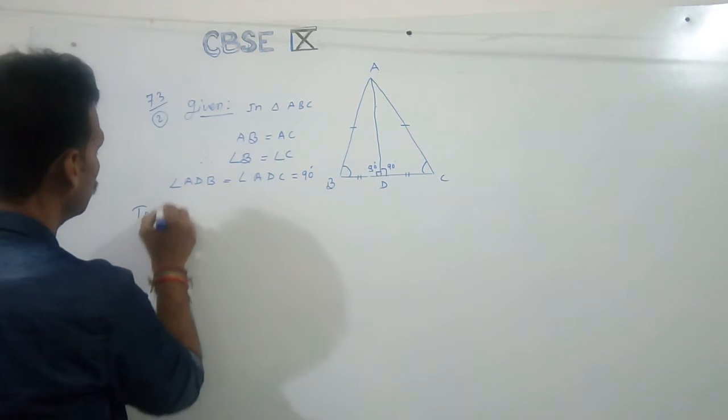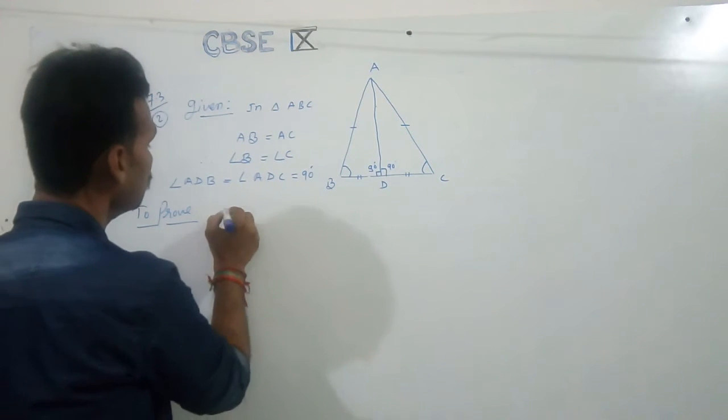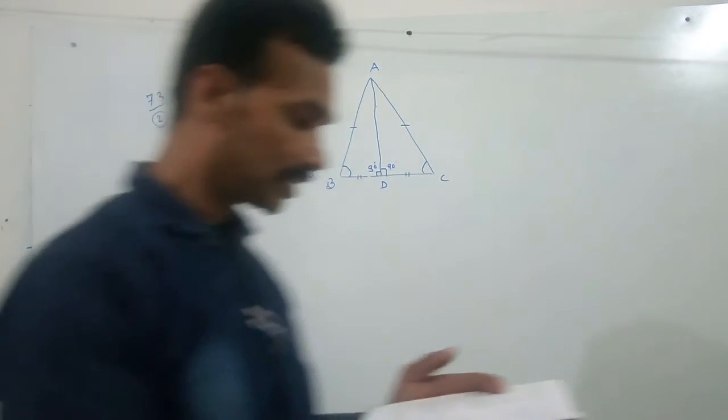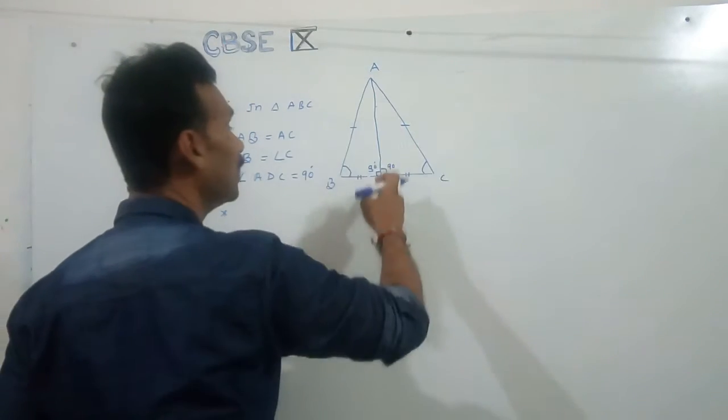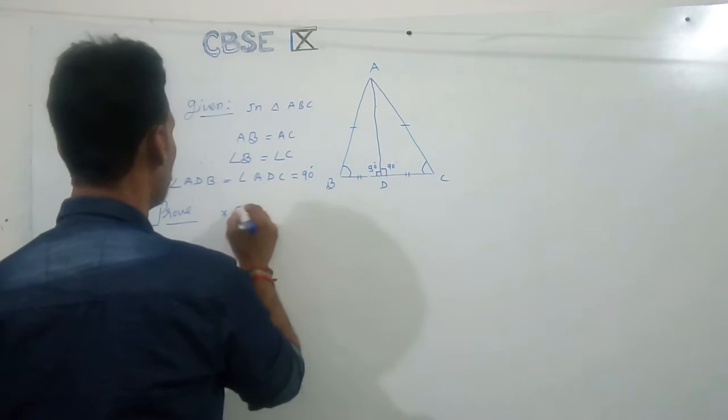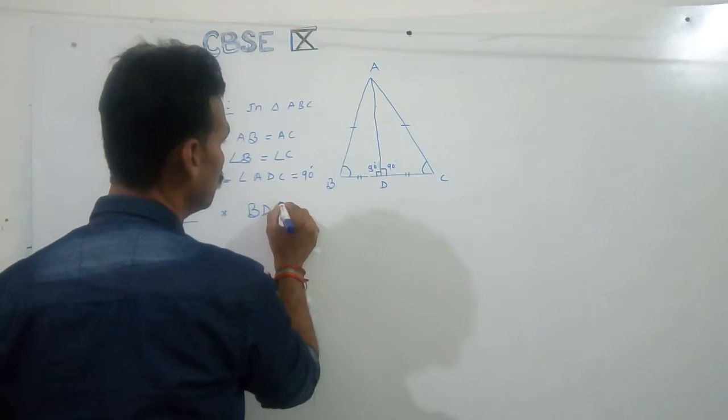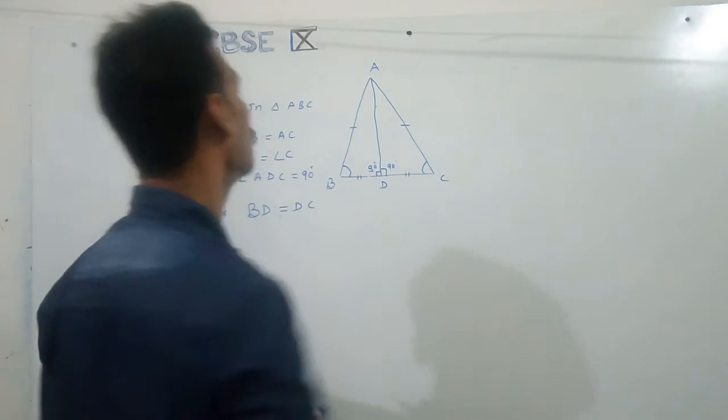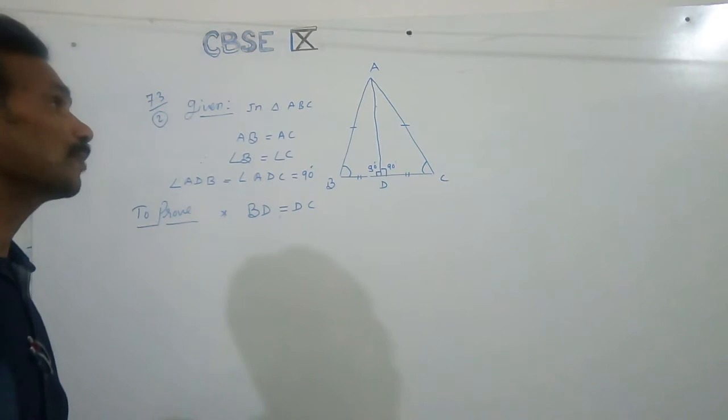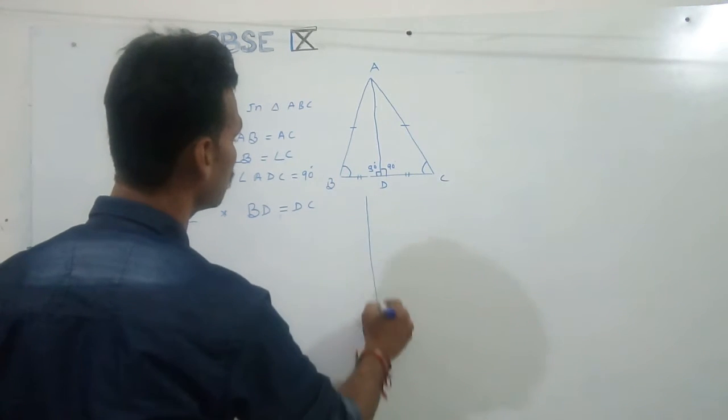And then now to prove, to prove first part AD bisects BC. AD, this is perpendicular bisects BC. Means first part BD equal to DC, right? So I am going to prove, to prove. Then second part, so first part proof.